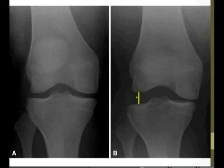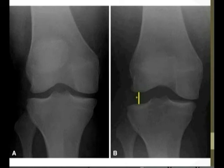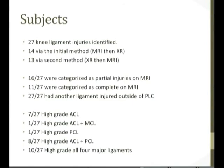In terms of subjects, 27 separate knees with posterolateral corner injuries were identified, though likely fewer than 27 patients since at least two had bilateral injuries. 14 were identified by the first method and 13 via the stress radiograph method. On MRI, 16 of the 27 were categorised as partial injuries and 11 as complete injuries. All 27 patients had an additional ligament injured, either an ACL or PCL.